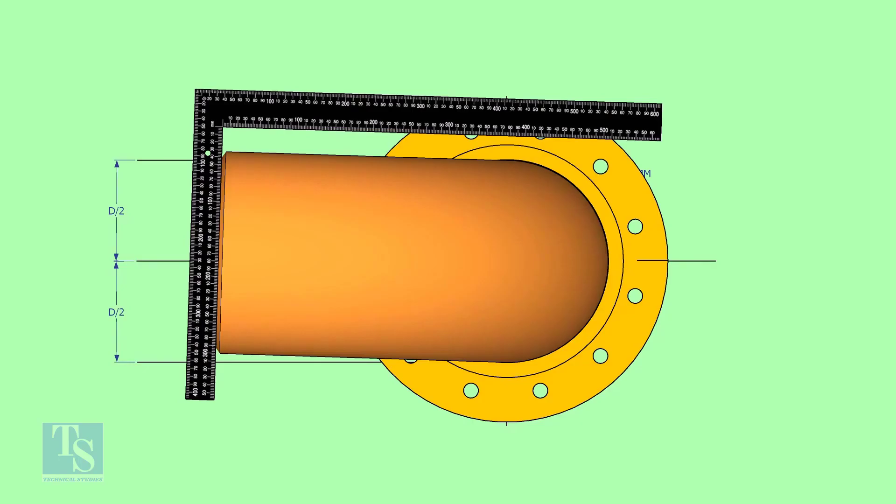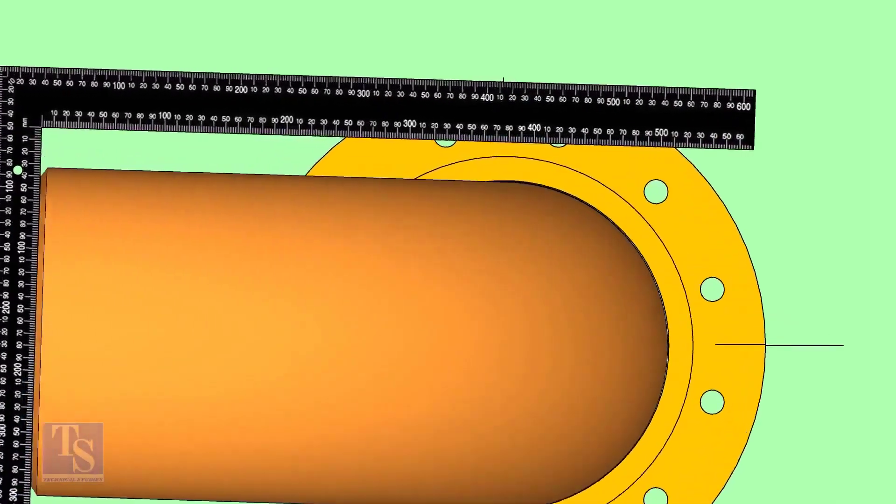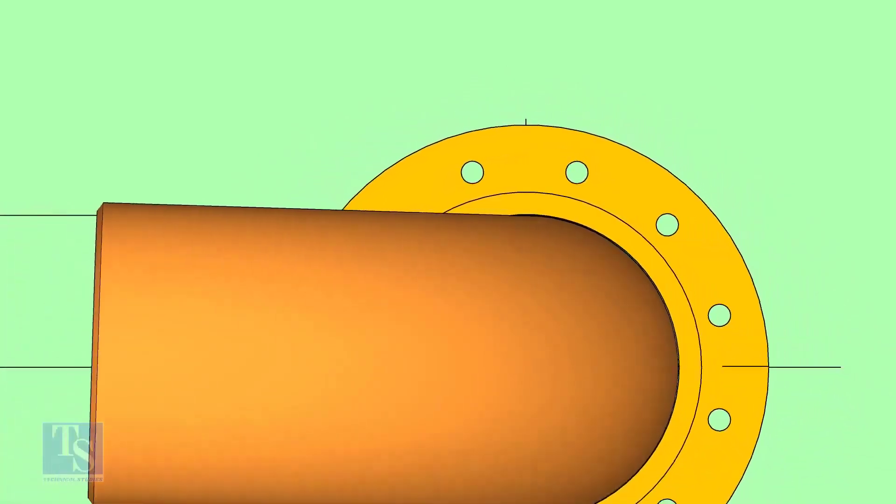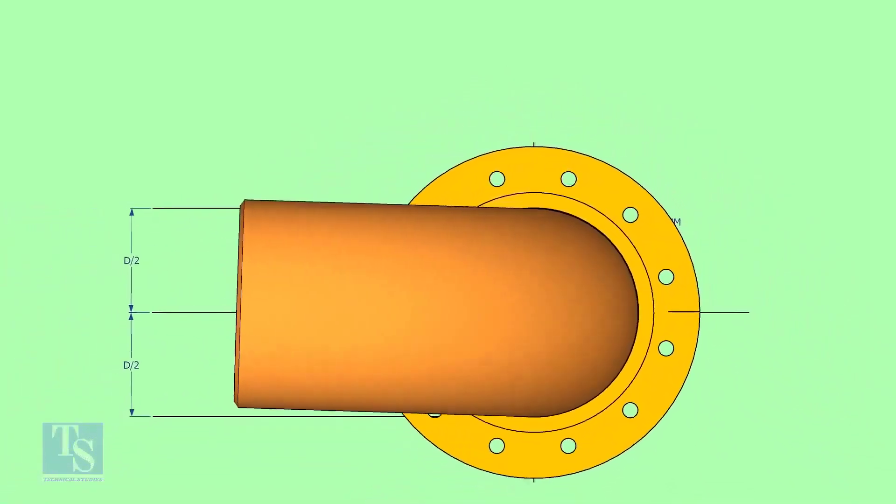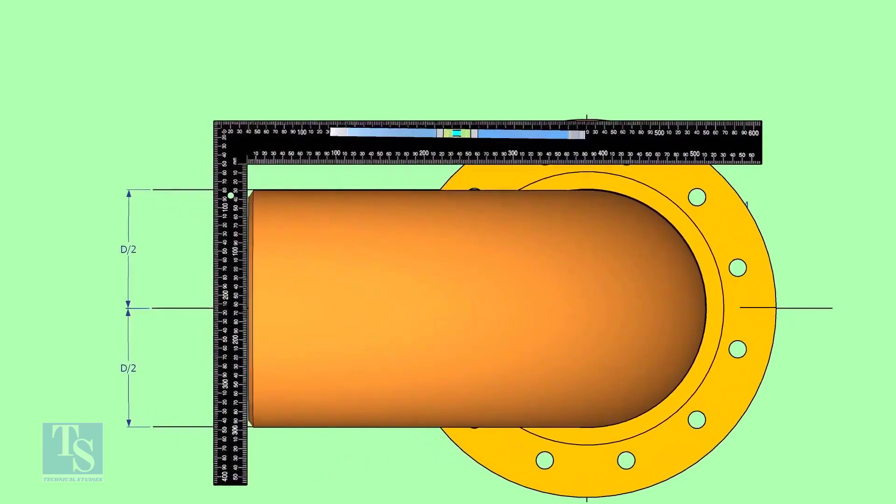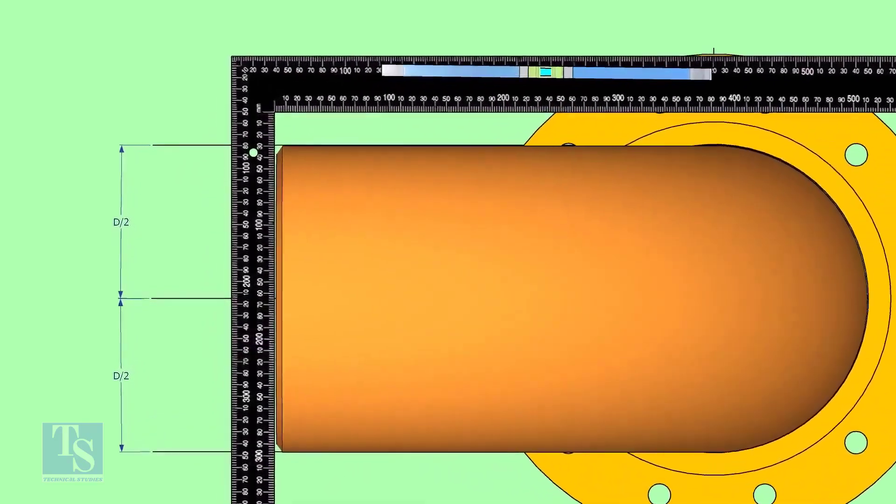Hold a right angle as shown and check if the reducer is turned. In this case, the elbow centerline is not parallel with the centerline of the flange. Rotate the elbow and correct the centerline.